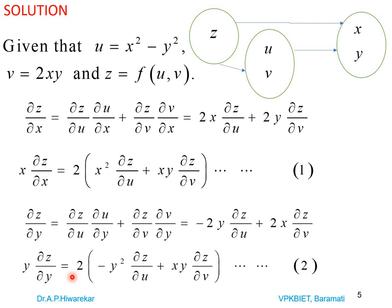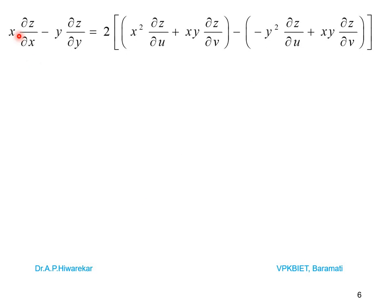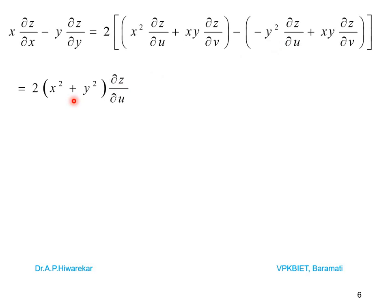Multiplying by y: y(∂z/∂y) = 2[-y²(∂z/∂u) + xy(∂z/∂v)]. Now computing x(∂z/∂x) - y(∂z/∂y): the xy terms cancel, and we get 2(x² + y²)(∂z/∂u). To get the required form, we write x² + y² as √(x² + y²) squared. We also note that (x² + y²)² = (x² - y²)² + 4x²y² = u² + v², so x² + y² = √(u² + v²). Therefore x(∂z/∂x) - y(∂z/∂y) = 2√(u² + v²) · (∂z/∂u), and the required result is proved.